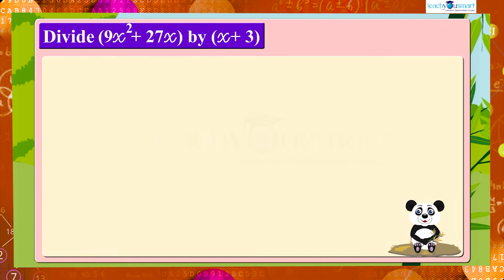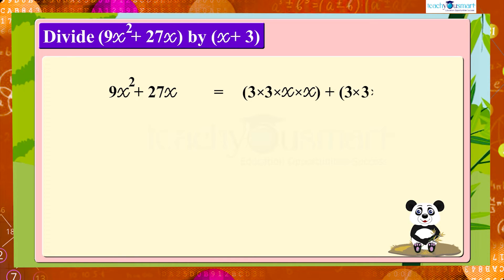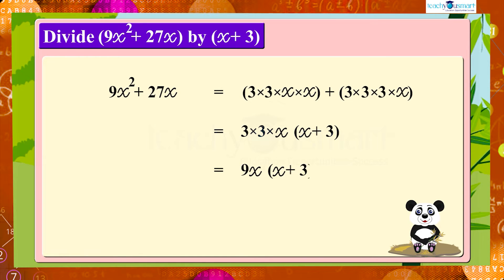That is, 9x² + 27x equals 3 × 3 × x × (x + 3), which simplifies to 9x × (x + 3).